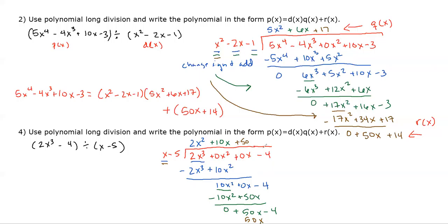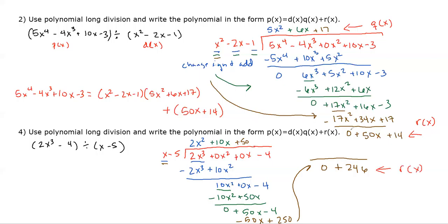Last step: what multiplied by x gives 50x? That's 50. So 50 · x = 50x, and 50 · (−5) = −250. Change signs and add — the x terms cancel. We get 250 − 4, but correcting: that's +246.